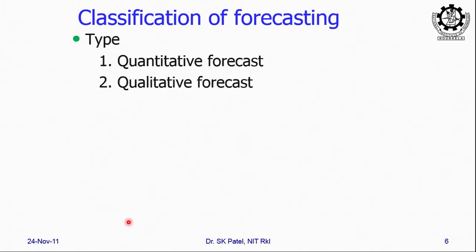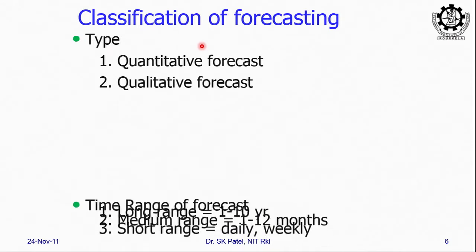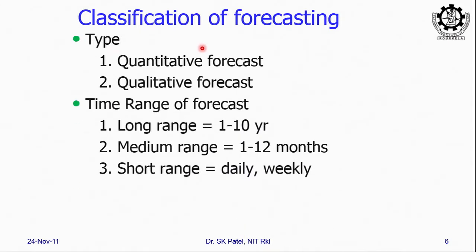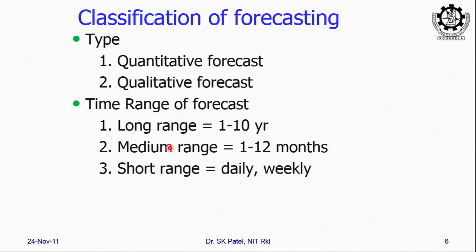Various types of forecast include whether you will be doing qualitative or quantitative forecast. Depending upon the time range — whether you are forecasting for the next 10 years (long range) or a very short range: daily, weekly, monthly, or medium range of one month to 12 months — depending upon the range of the forecast.